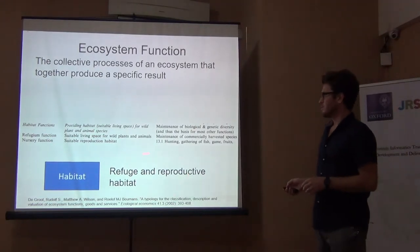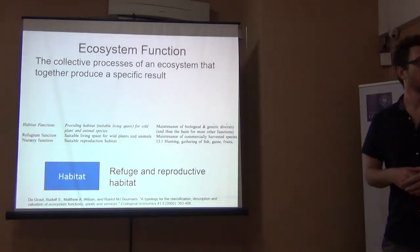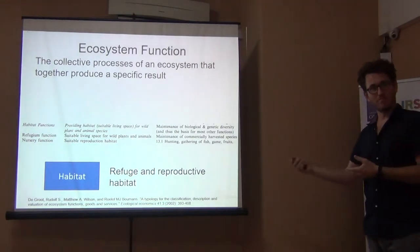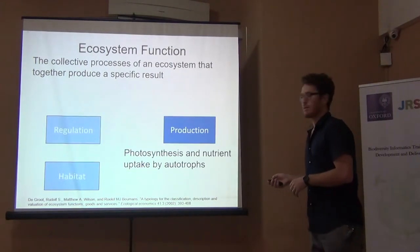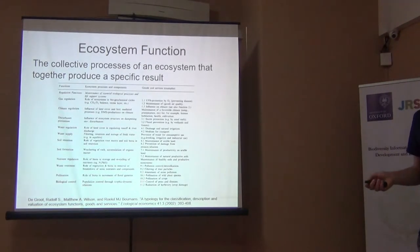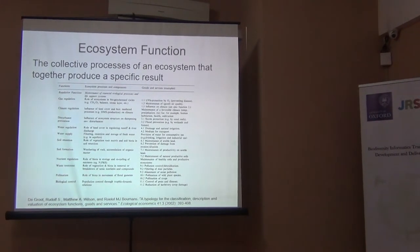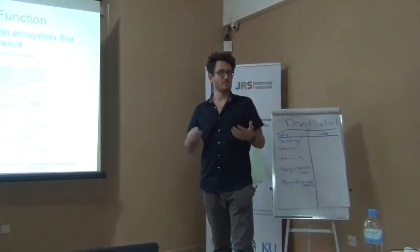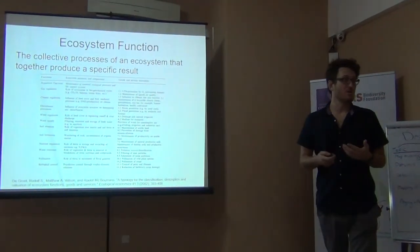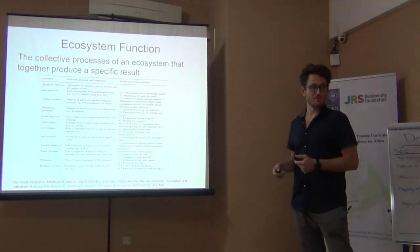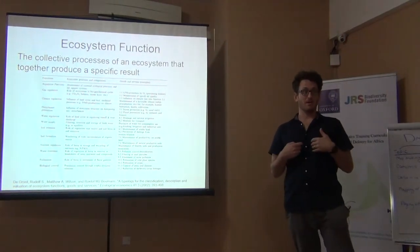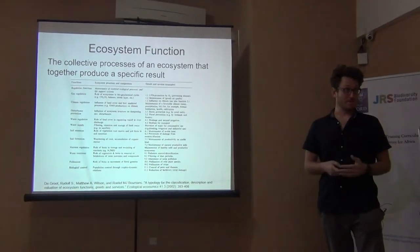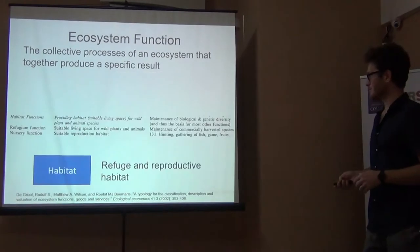Another important category is habitat — the refuge and reproductive habitat provided by an ecosystem. It's a function that gives the result of provisioning habitat to different organisms. A student raised the point that pollination is listed as a function, but could also be called an ecosystem service. The answer is it can be both: some processes combine with other processes to form an ecosystem service, but some processes are ecosystem services in themselves. If a process directly serves us, then it's also an ecosystem service.